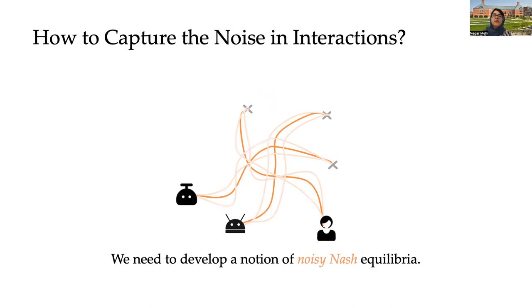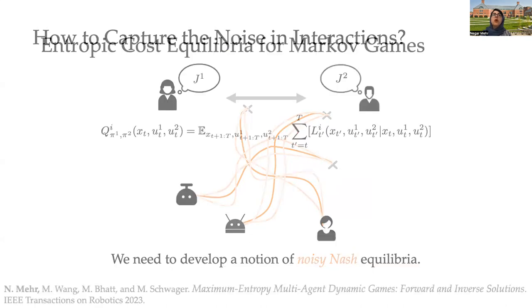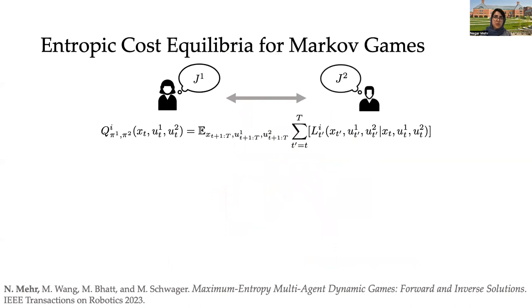We do this through a framework that we introduce and the notion of equilibrium that we call entropic cost equilibrium in dynamic games. We define the notion of a Q function for each agent in a multi-agent domain, and then we assume that every agent can compute the expected value of its Q function with respect to the policies of all the other agents.